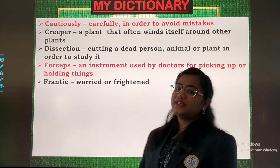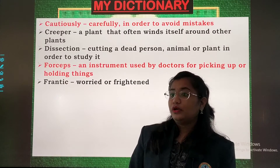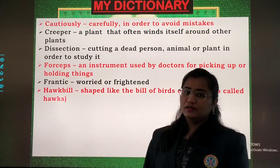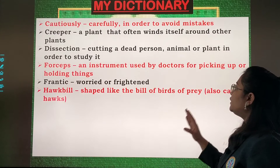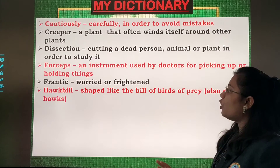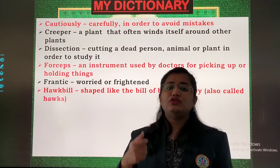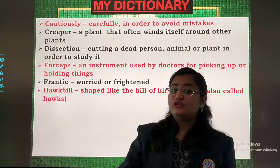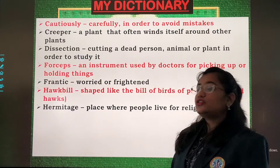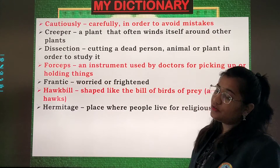Frantic means worried or frightened — jab aap thode dare hue ho, means you are frantic. After that, hawkbill: shaped like the bill of birds of prey also called hawks. These are the type of tools which are used for surgeries. Then hermitage: a place where people live for religious reasons.